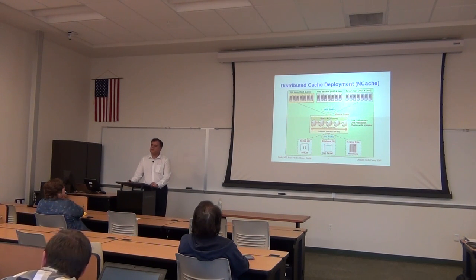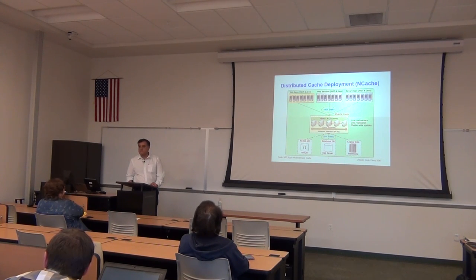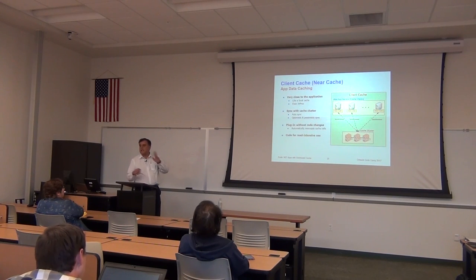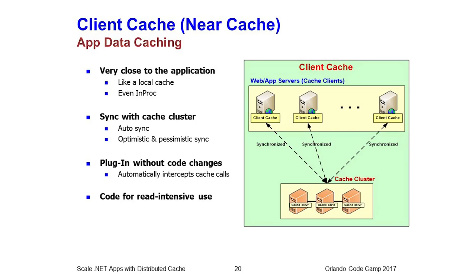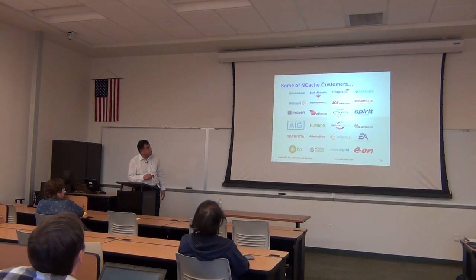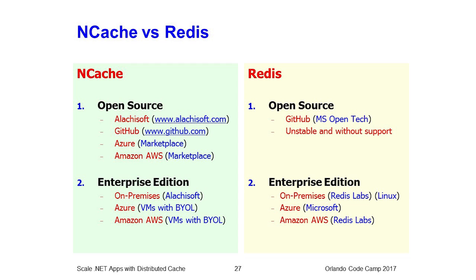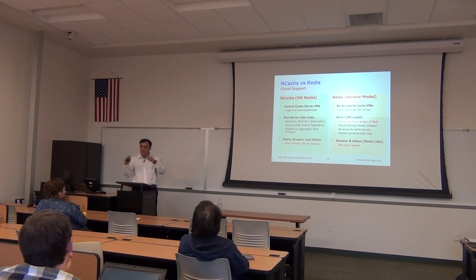For cloud deployment on Azure there are basically two options for a .NET developer: NCache and Redis. NCache has a VM model — you go to the Azure marketplace, purchase the NCache VM, and have VMs just as if they were on-premises, just happening to be in the cloud. With Redis you don't see the VMs, it's a black box, so you have no control over any of those hardware or configuration details.